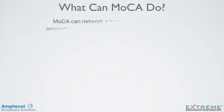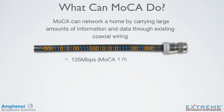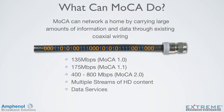MOCA can network a home by carrying large amounts of information and data through existing coaxial wiring. There are currently three versions of the MOCA standard. MOCA 1.0 can deliver 135 megabits per second throughput. MOCA 1.1 can deliver 175 megabits per second. MOCA 2.0 can deliver between 400 to 800 megabits per second, depending on which options are used, such as channel bonding. MOCA 2.0 can deliver multiple streams of HD content and interconnect data services.